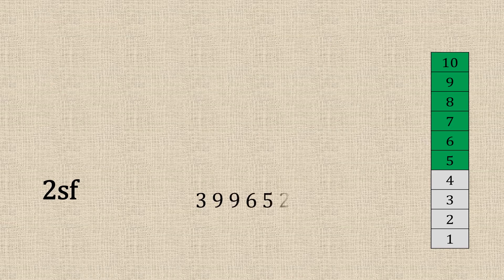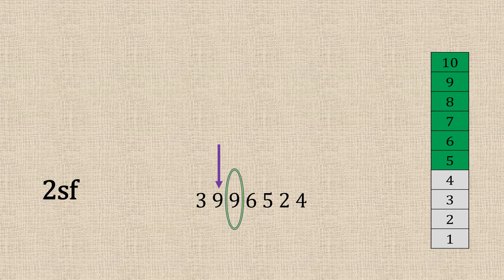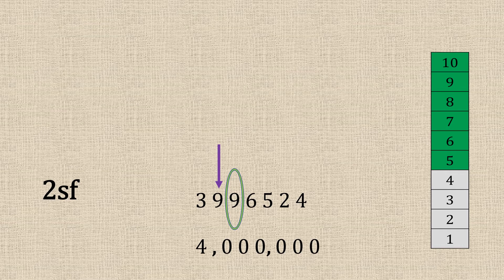Now two significant figures. So our second figure is nine and our neighbour is nine. We're going to add one and carry it over again. And our answer would be four million.